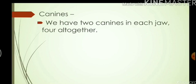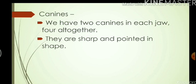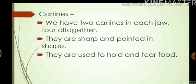Canines. We have two canines in each jaw. On each side of the four incisors we have canines — one canine on the left and one on the right in both the upper and lower jaw — giving us four canines in total. They are sharp and pointed in shape. They are used to hold and tear food. Foods that are a bit tough and we can't bite into easily, we use our canines to tear them — for example, a chapati or a paratha.